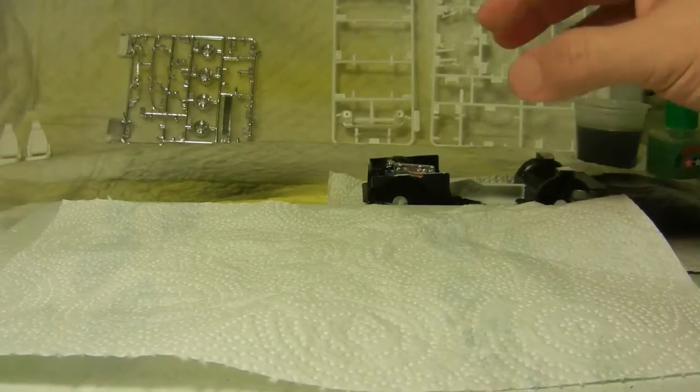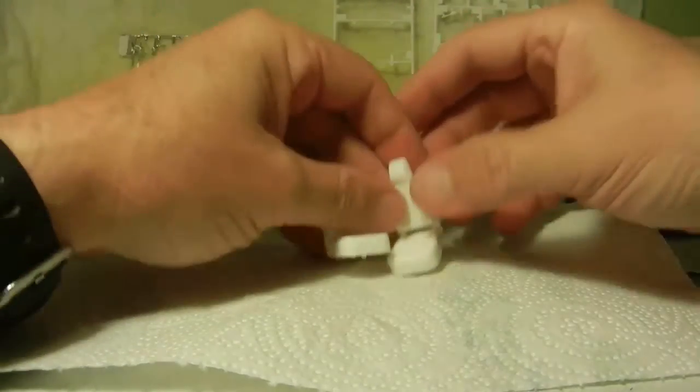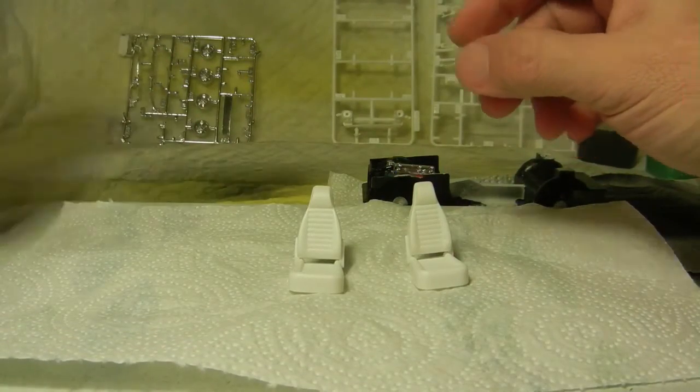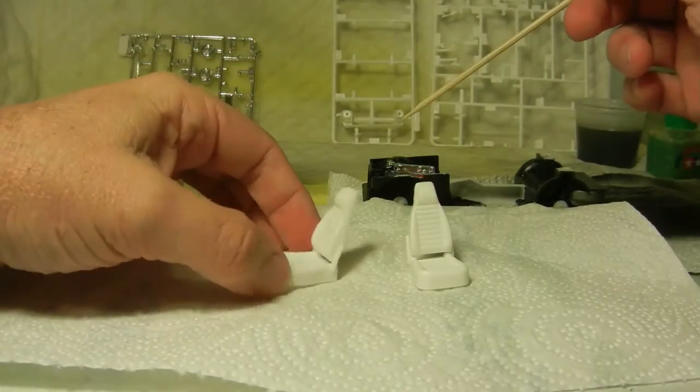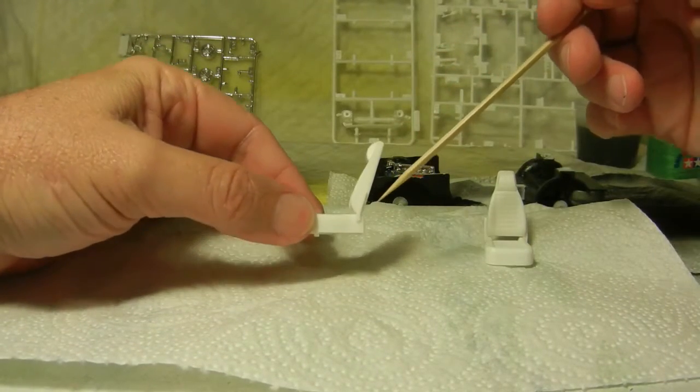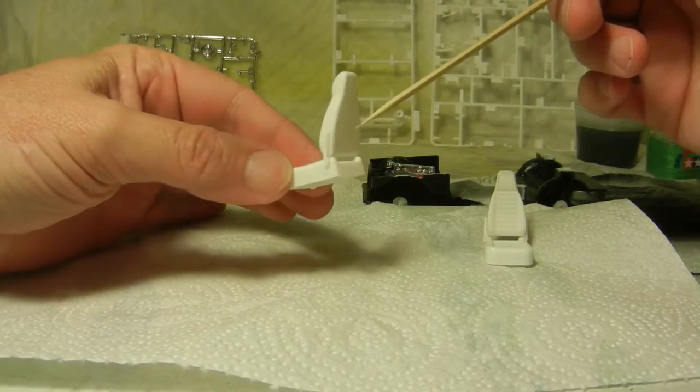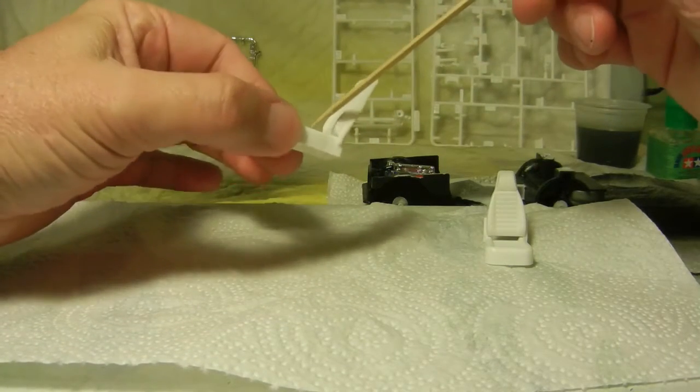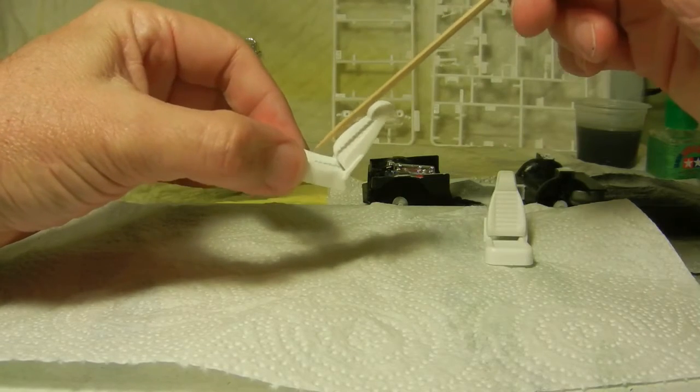Kind of set that one off to the side. A couple other things here, I did go ahead and glue some of the seats together. If you recall these seats are actually three parts. You have a backing and you have the front and then you have the seat itself where you sit in.